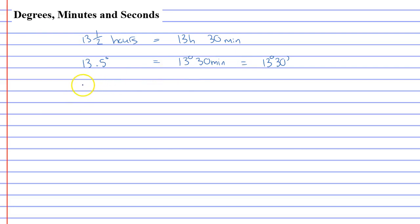There's even other angles you can talk about, such as 13.75 degrees. Now, 0.75 represents three quarters. So this would be 13 degrees, 45 minutes, since 45 minutes is three quarters of a degree.